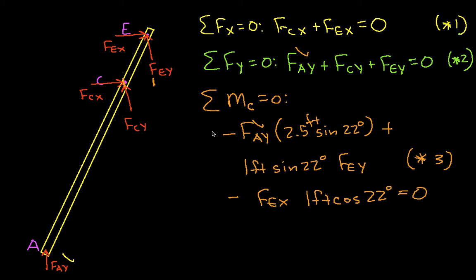The next thing we'll do is a free body diagram of the right leg of the ladder and come up with three more equations. At that point we'll have as many equations as we have unknowns and we'll be able to solve the resulting set of equations.